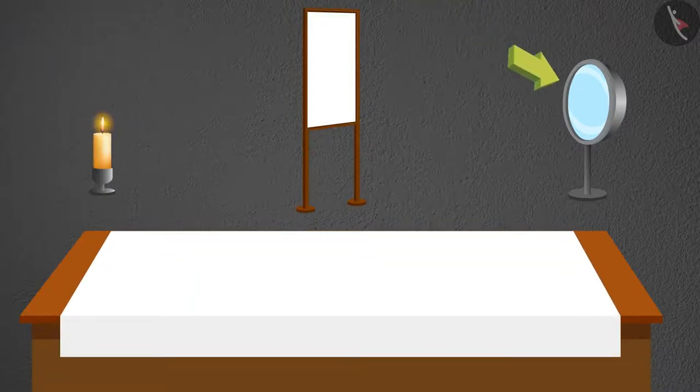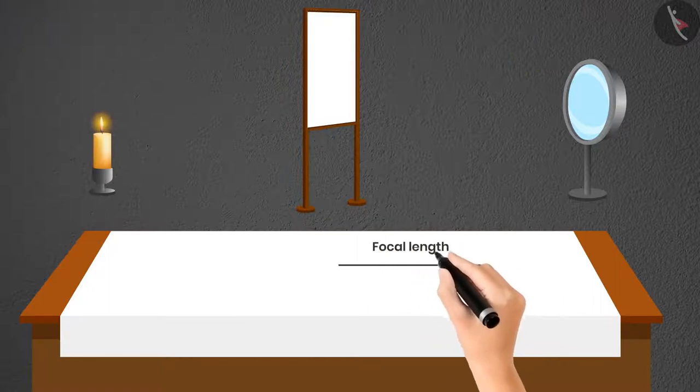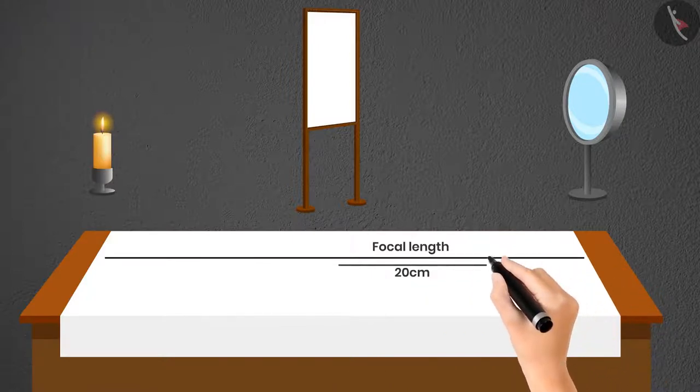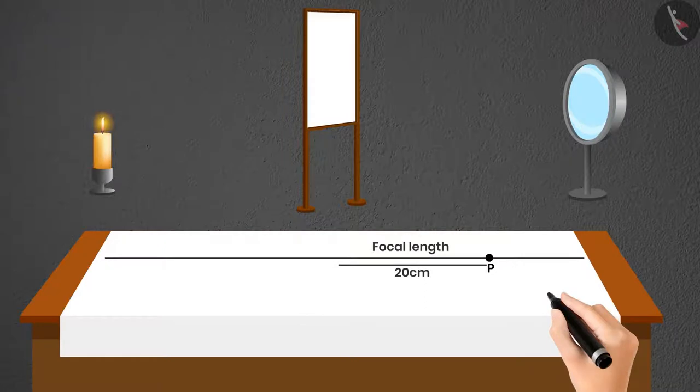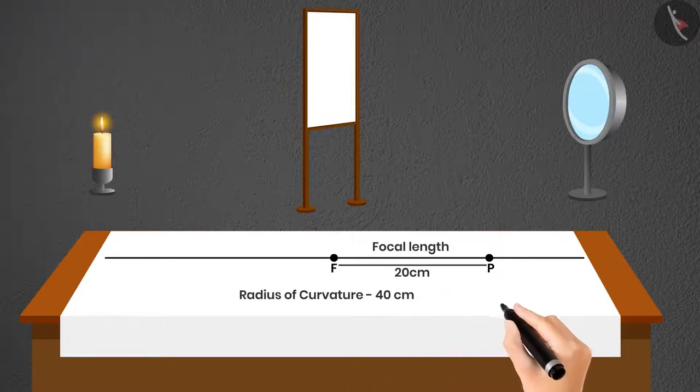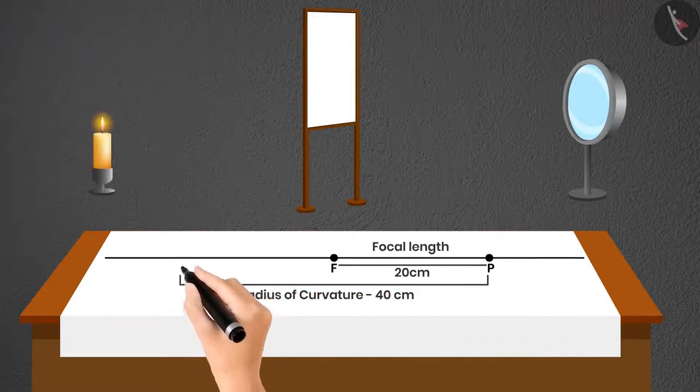It is a concave mirror having a focal length of 20 cm. So I will mark a point P on one side of this chart. If the focal length is 20 cm, then F must be at a distance of 20 cm. And we already know that the radius of curvature is twice the focal length. Then C can be marked at a distance of 40 cm from P.